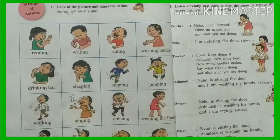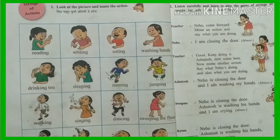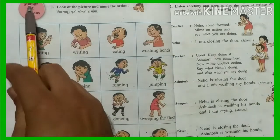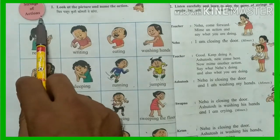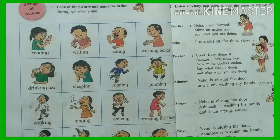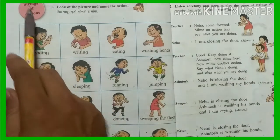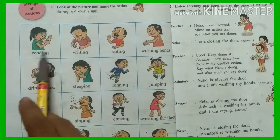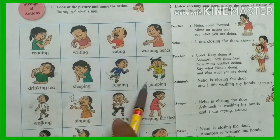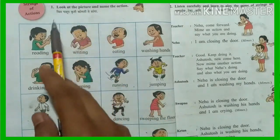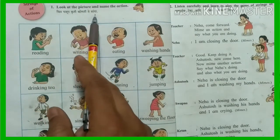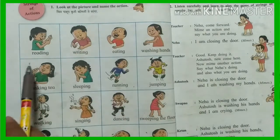Welcome students. Today we are going to see a new topic. Page number 20: Strings of Actions. Strings means row or line, Actions means Kruti. So Strings of Actions means a row of actions. First, look at the picture and name the action — Chitra Pahun, Kruti Kunti Te Sangha. Let's see the actions.